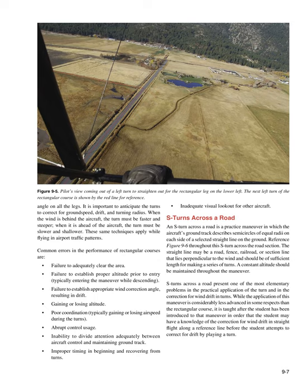Usually, drift should not be encountered on the upwind or the downwind leg, but it may be difficult to find a situation where the wind is blowing exactly parallel to the field boundaries, making it necessary to use a slight wind correction angle on all legs. It is important to anticipate the turns to correct for ground speed, drift, and turning radius. When the wind is behind the aircraft, the turn must be faster and steeper; when it is ahead of the aircraft, the turn must be slower and shallower. These same techniques apply while flying in airport traffic patterns. Common errors in the performance of rectangular courses are: failure to adequately clear the area; failure to establish proper altitude prior to entry; failure to establish appropriate wind correction angle resulting in drift; gaining or losing altitude; poor coordination; abrupt control usage; inability to divide attention adequately between aircraft control and maintaining ground track; improper timing in beginning and recovering from turns; and inadequate visual lookout for other aircraft.